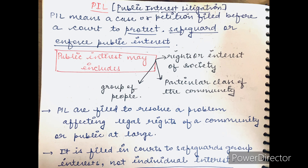PIL means Public Interest Litigation. PIL का मतलब होता है कोई भी एक case या petition जो हम court के सामने file करते हैं, ताकि जो public interest है उनको protect किया जा सके, safeguard हो सके या enforce करा सके। Public interest में includes right or interest of the society, या right or interest of a particular class of the community, या group of people। PIL जो file की जाती है, they are filed to resolve a problem जो एक legal right को affect कर रही है — एक particular community की या public at large की। It is filed in court to safeguard group interest, not individual interest। PIL कभी भी एक particular individual की interest को protect करने के लिए file नहीं की जाती, rather यह एक group या community के interests को safeguard और protect करने के लिए file की जाती है।